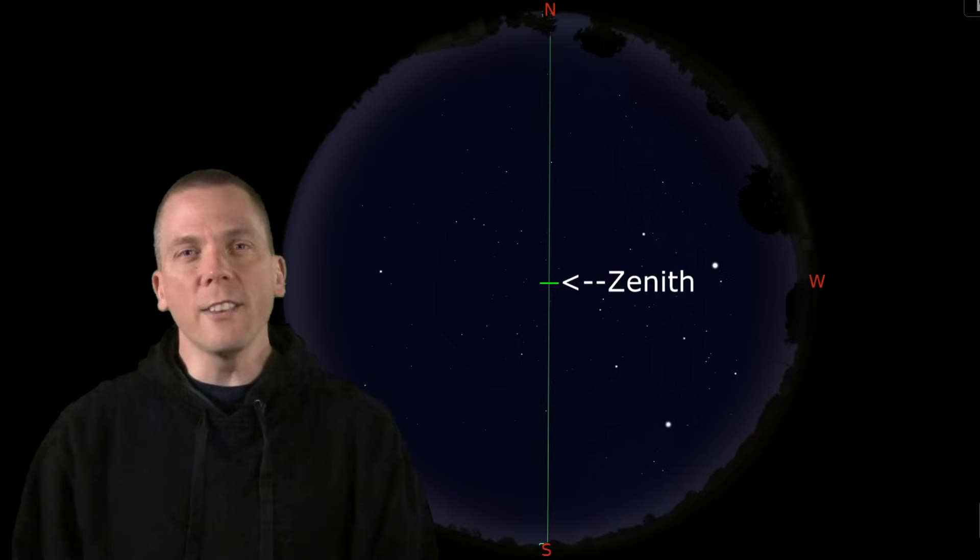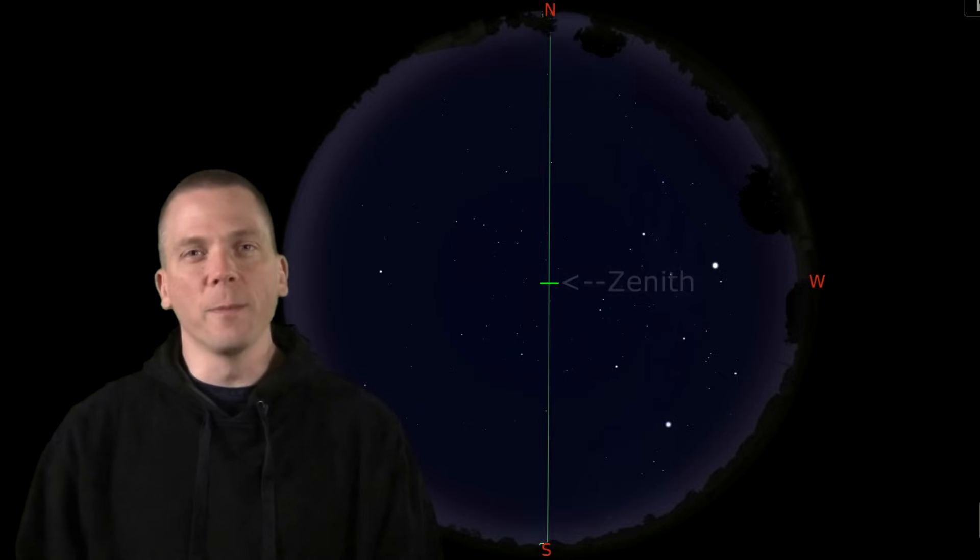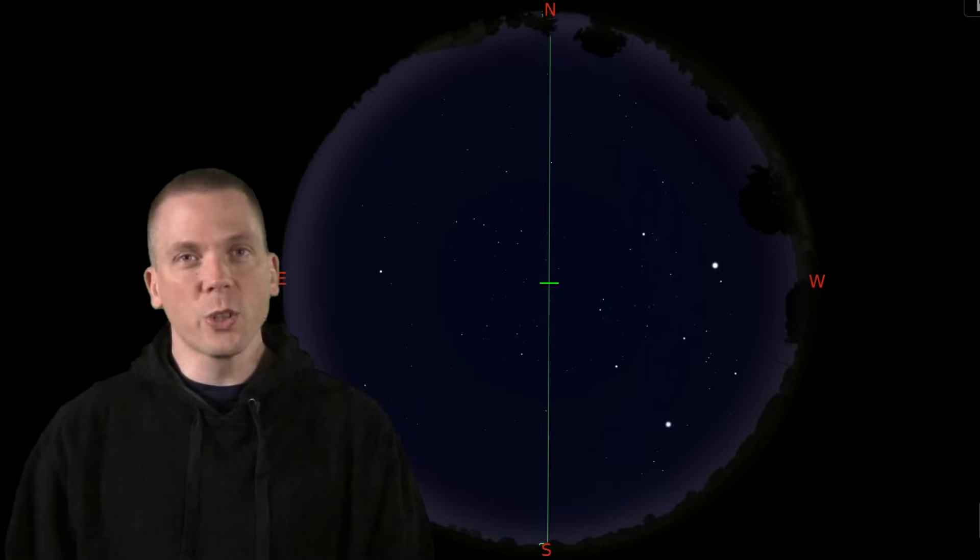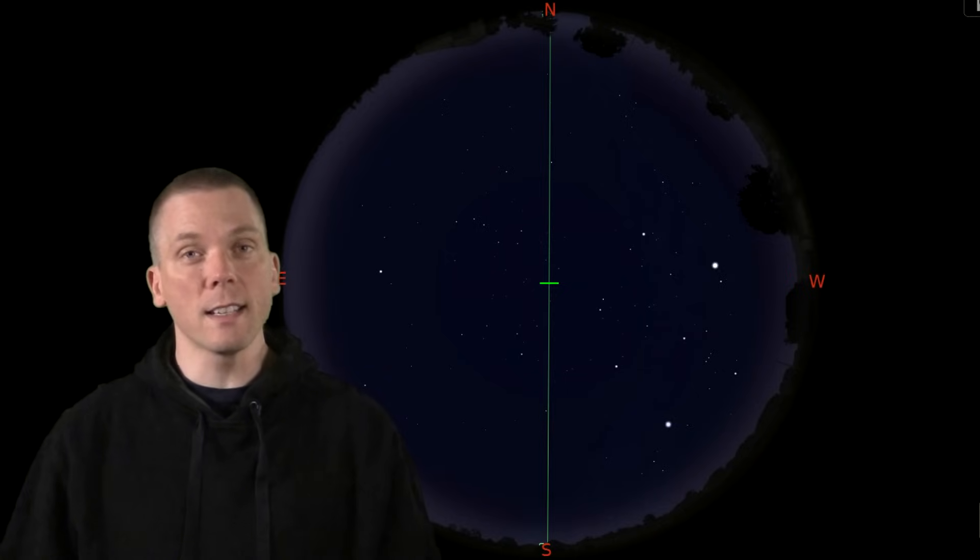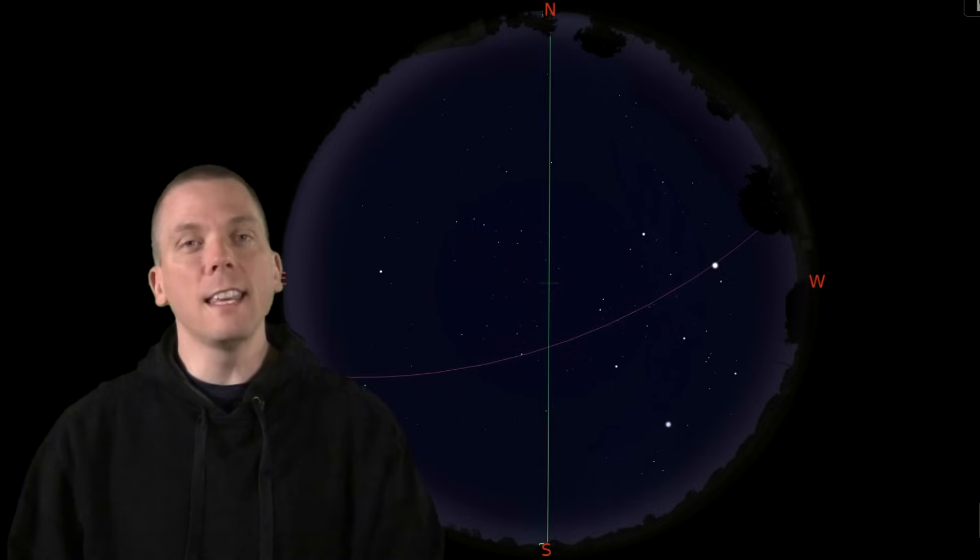So what other locating features in the sky are there? Although we don't see stars during daytime, the imaginary line in the sky that the sun traces as Earth revolves around the sun is called the ecliptic.